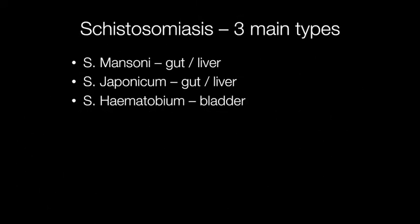The part of the body affected by Schistosomiasis depends on the particular species. Mansoni and Japonicum infect the gut and liver, whereas Haematobium infects the bladder. These are the main three species of Schistosomiasis, but there are many other types.